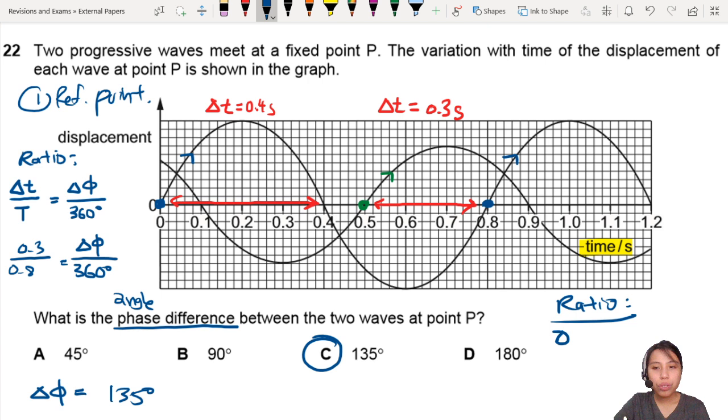This is also another phase difference. This will be 0.4 seconds over 0.8 over phase difference over 360. So this one will give you a phase difference of 180. And you're like, then shouldn't there be two answers? Oh wait, I see an error. I drew the arrow wrongly. The reference point could be here to here. Yeah, 0.5. Sorry, my bad, 0.5.